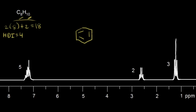Let's look at the integration. Sometimes you'll see it given like this: this complex signal represents five protons, this signal represents two protons, and this signal represents three protons. The five-proton signal is in the aromatic range, approximately 6.5 to 8 ppm.